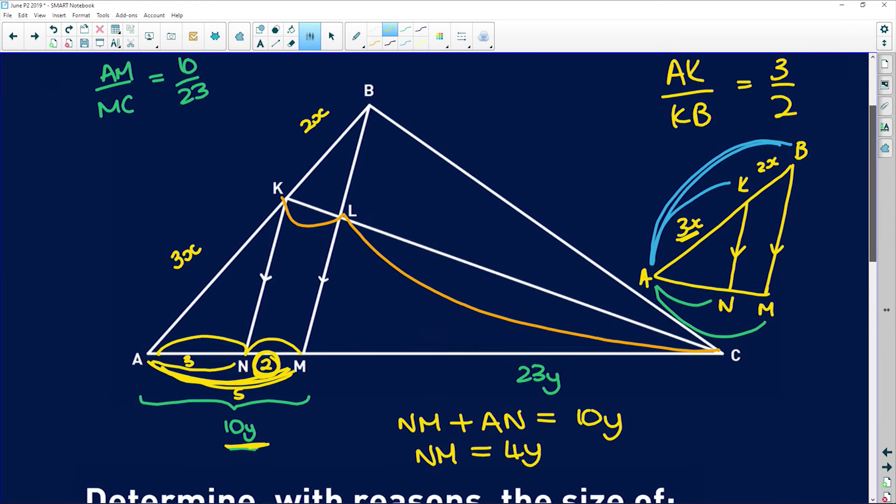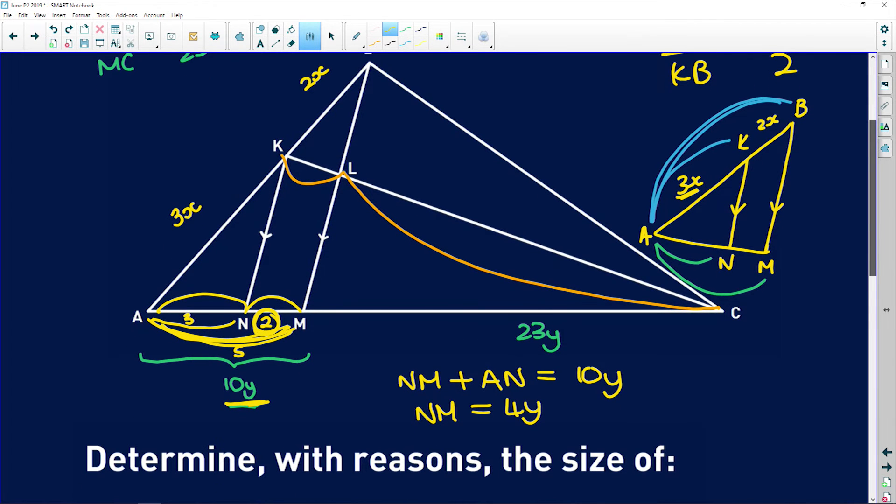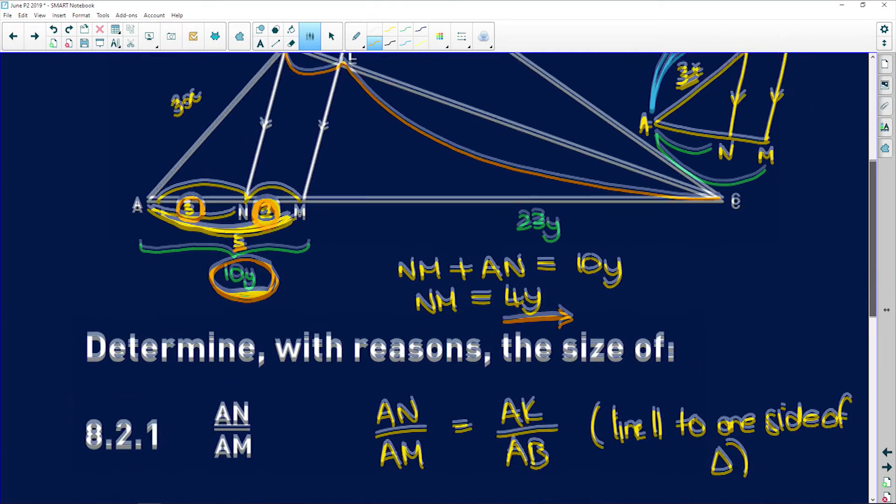I hope that makes sense, guys. Remember, when you're trying to find a ratio, you add the two parts of the ratio to get you the total. And that means that there are five parts in that ratio. But this whole side is 10Y. So if there are five parts and it's 10Y, each of those parts is equal to 2Y. And NM is two of those parts. So it is 4Y. I really hope that makes sense.